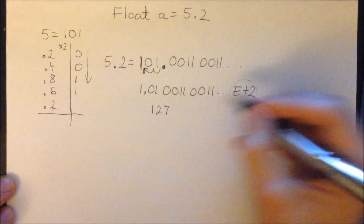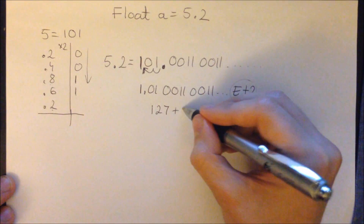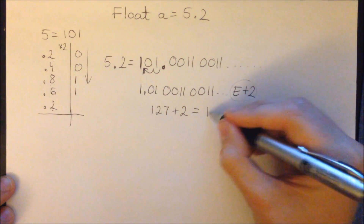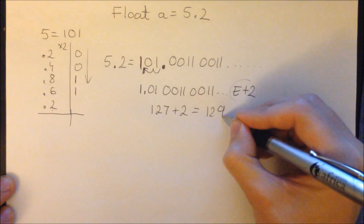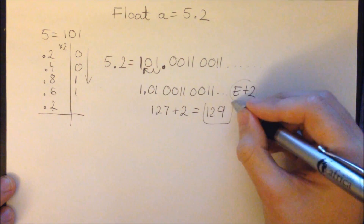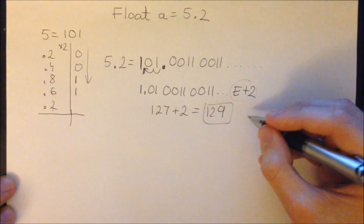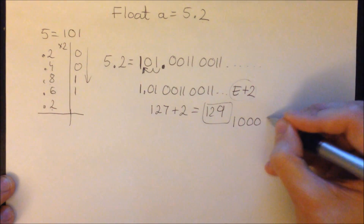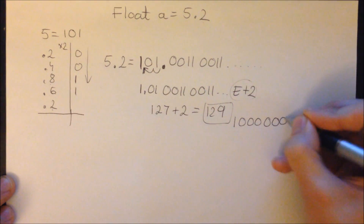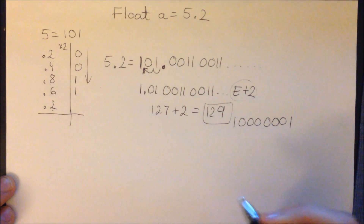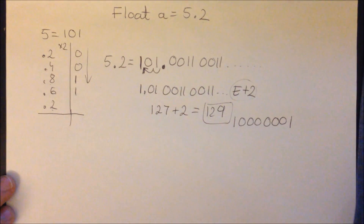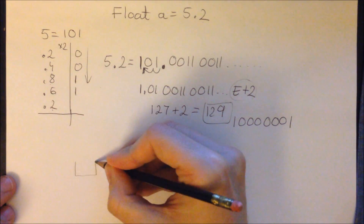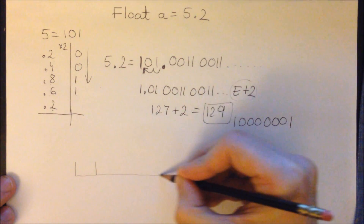There is a trick where we have to add 127 to our exponent, which is 2. That gives us 129, which in binary is 1 followed by 6 zeros and 1 — that is 10000001.